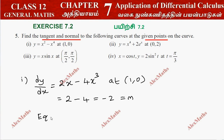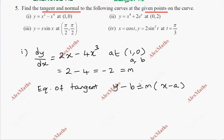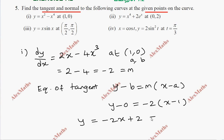Equation of tangent formula: y minus b equal to m into x minus a. So y minus y1 equal to m into x minus x1. Substituting x1 = 1, y1 = 0, m = -2: y minus 0 equal to minus 2 into x minus 1. So y equals minus 2x plus 2, which gives 2x plus y minus 2 equal to 0.